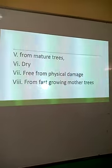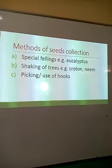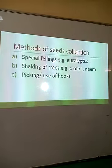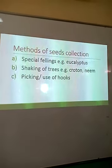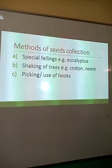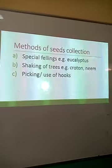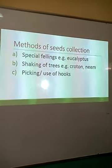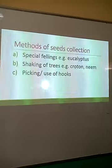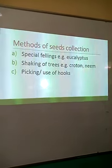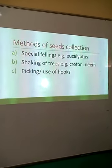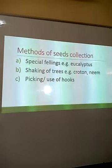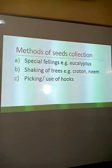How do we collect the seeds? Three methods. One, special fellings — you cut down a tree and collect the seeds, especially when the tree is tall and you cannot collect the seeds one by one from the top, like for eucalyptus. Two, by shaking the trees, like croton and neem — you shake and the seeds, pods, or whatever was containing the seeds will fall.